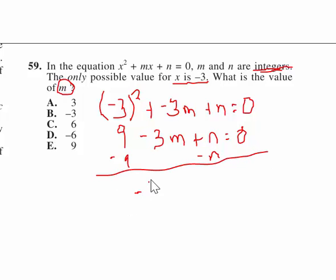So, it'll give us minus 3m equals minus 9. So, again, brought it over from here, a minus n equals.